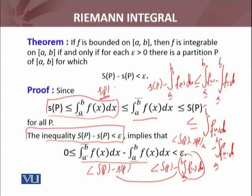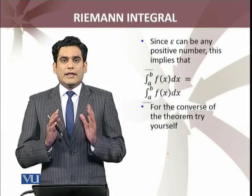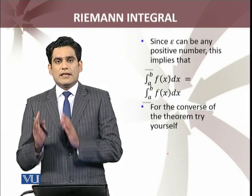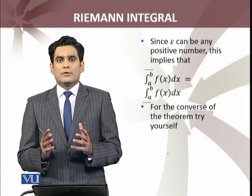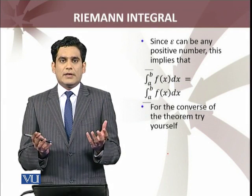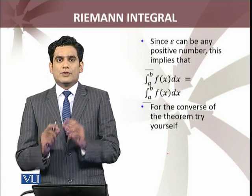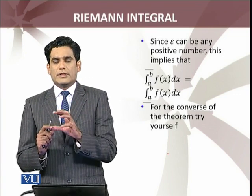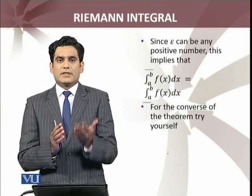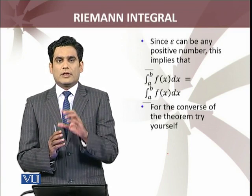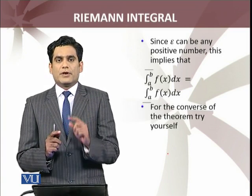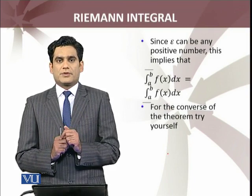And by our supposition, U(P) minus S(P) is less than epsilon. So we have the upper integral minus the lower integral less than epsilon, where epsilon is any number greater than zero. Since this holds for any arbitrary epsilon greater than zero, that difference must equal zero. Therefore, the upper integral equals the lower integral, giving us integrability. The converse direction you will try yourself.